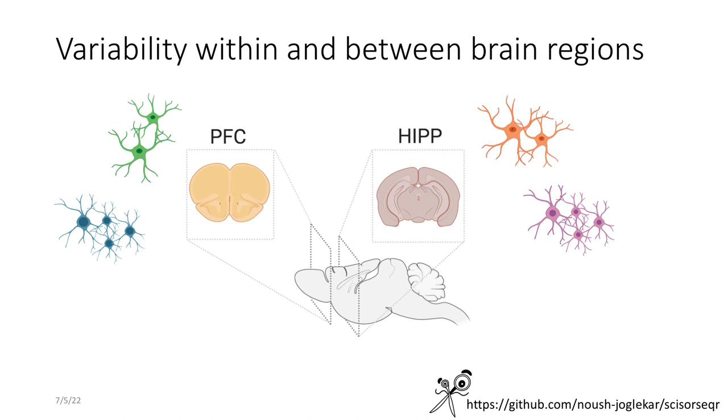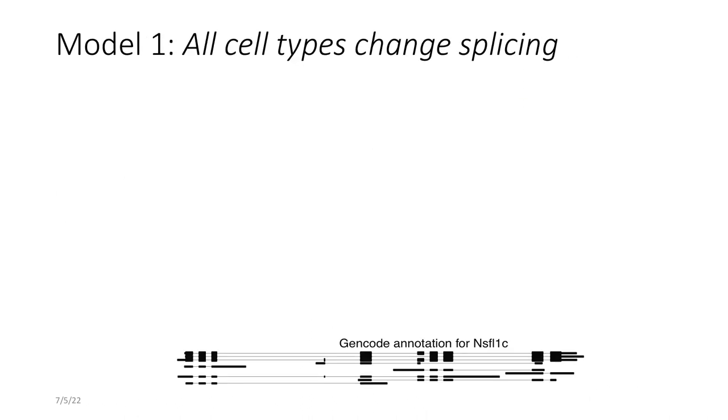So the first question I asked is between two brain regions which have the same homogeneous cell types, do we get the same isoform patterns? So what we found is that there's two main models that are followed. Model one is that all cell types investigated change splicing and that is what contributes to this region specific splicing.